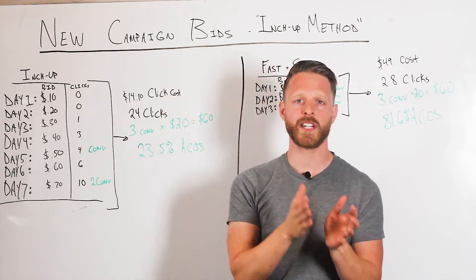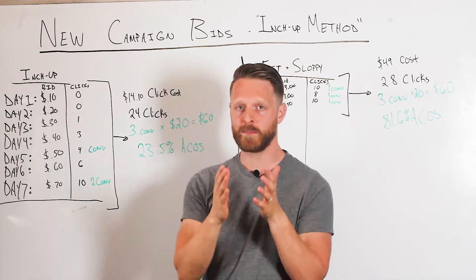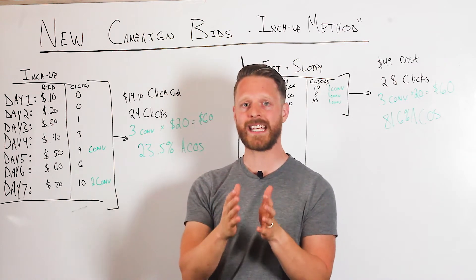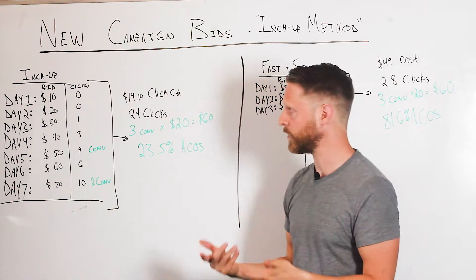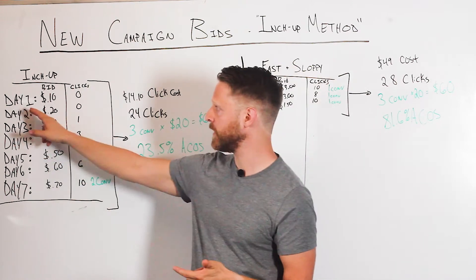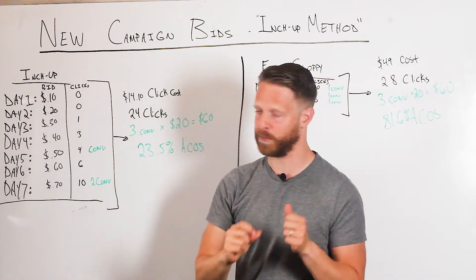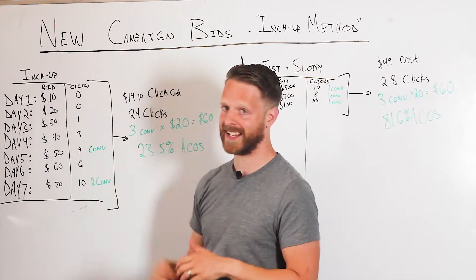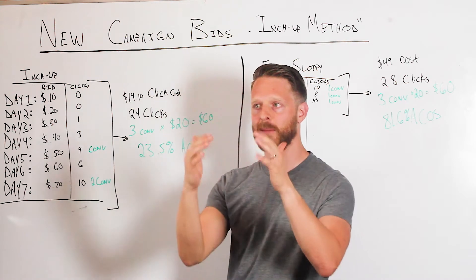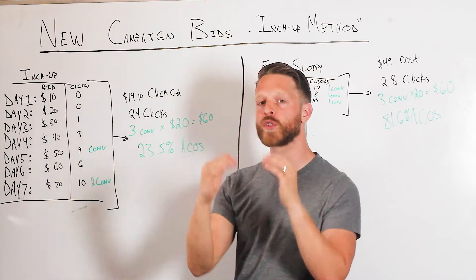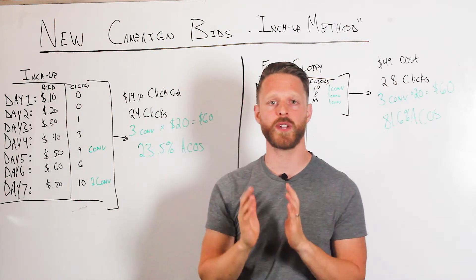Basically, the way that good PPC optimization works is we're trying to find the smallest bid that gives us the most information. That means on day one: a micro bid — ten cents. I'm undershooting, being conservative with a brand new keyword that I don't know how will actually perform.